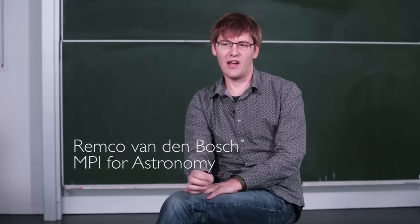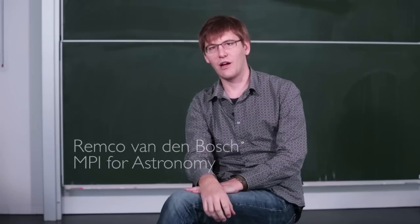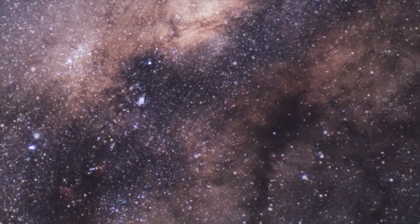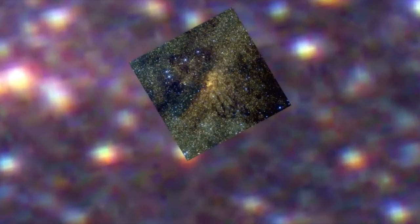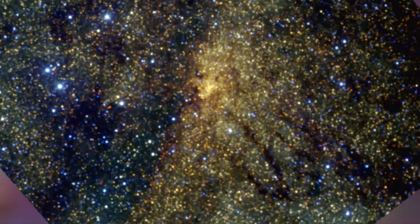We know that galaxies have very big supermassive black holes in their center. And the best known example of that is the supermassive black hole in the center of our Milky Way. The black hole in the center of our Milky Way has a mass of 4 million suns. So how do we know that? How do we know that there's such a big black hole?